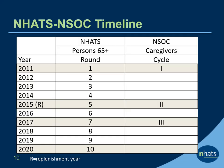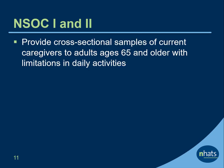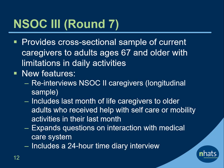NSOC 1 to 3 have been conducted in conjunction with NHATS at periodic intervals. NSOC 1 was conducted in 2011, NSOC 2 in 2015, and NSOC 3 in 2017. NSOC 1 and 2 provide cross-sectional samples of current caregivers to adults ages 65 and older who have limitations in daily activities. NSOC 3 provides a cross-sectional sample of current caregivers to adults ages 67 and older with limitations in daily activities.